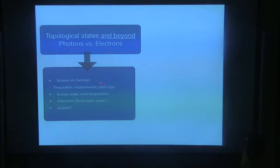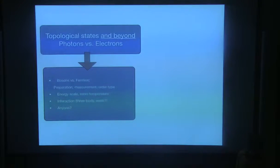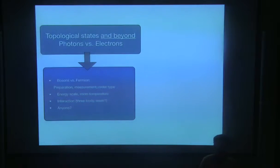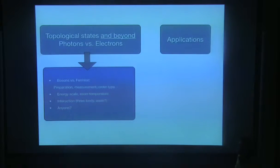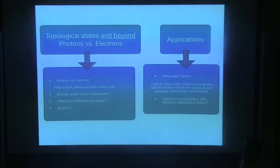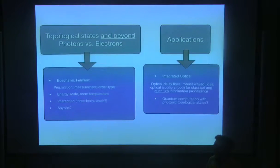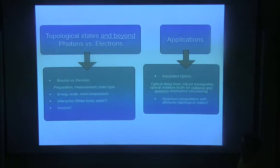One of the fundamental motivations is whether we can see some of the predictions that people have in quantum Hall effect. In particular, can we see fractional statistics in a photonic system if we manage to implement quantum Hall models in photonic systems? And then once we understand them, we might be able to find some applications. For example, topological states are advertised as being very robust and useful — so can we actually make some useful devices out of this robust physics?